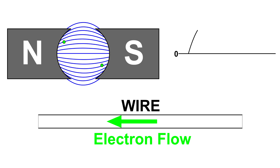The wire loop has rotated some more and notice that our sine wave is continuing to grow, and the electrons are flowing more in the wire. That is because the wire loop is cutting across the magnetic fields at less of an angle. Here the wire loop is cutting across the magnetic field straight on, and we have the highest output and in the wire the most electron flow.